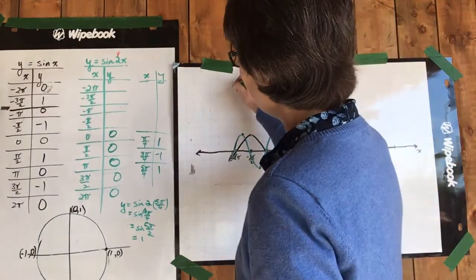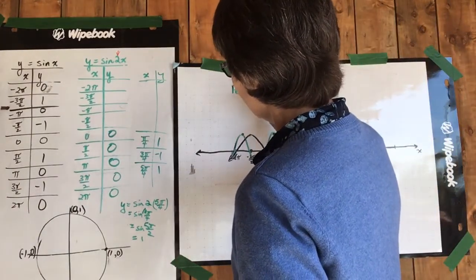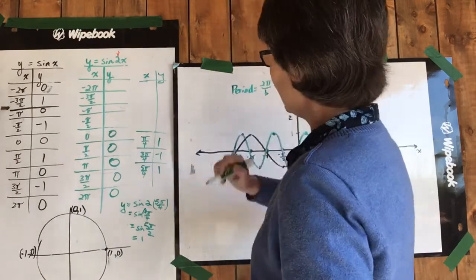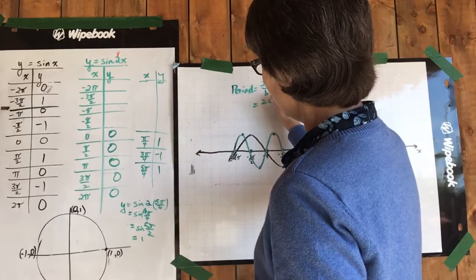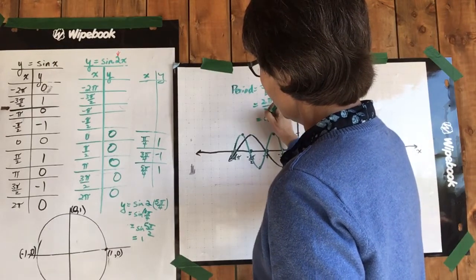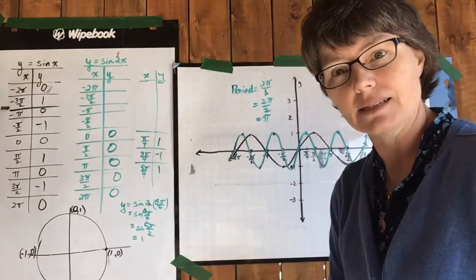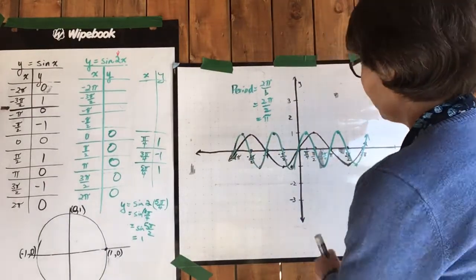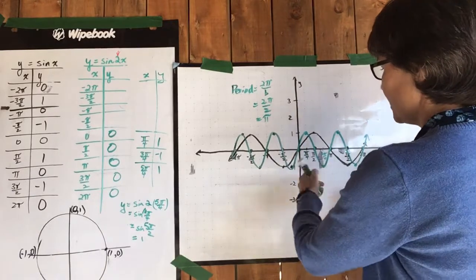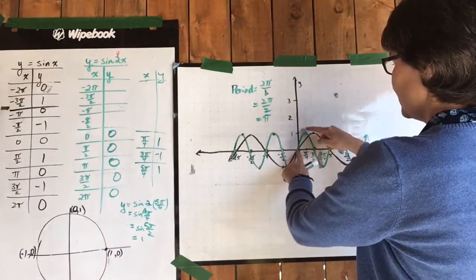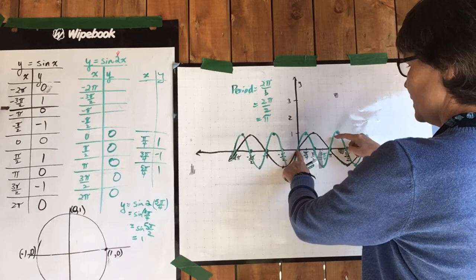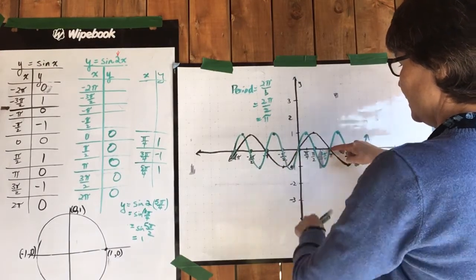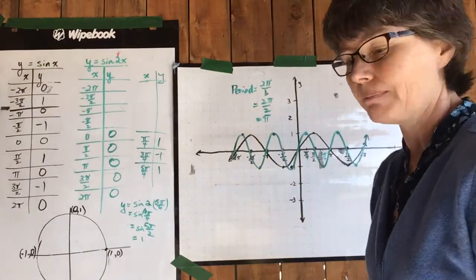So let's think about that. Period is equal to two pi over b. In this case, our b is two. Two pi over two, which equals pi. Now, does this make sense? Is the period of this green graph pi? Let's start at any point. You can start anywhere and see if that distance is pi before it starts repeating itself. Yes. So there's one full wave up and down to here, and that distance is pi.